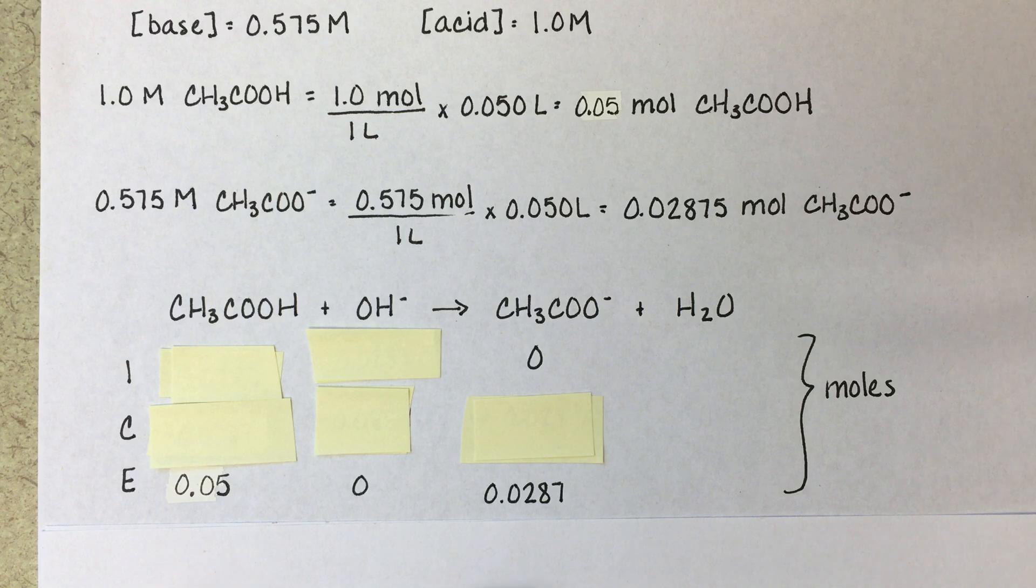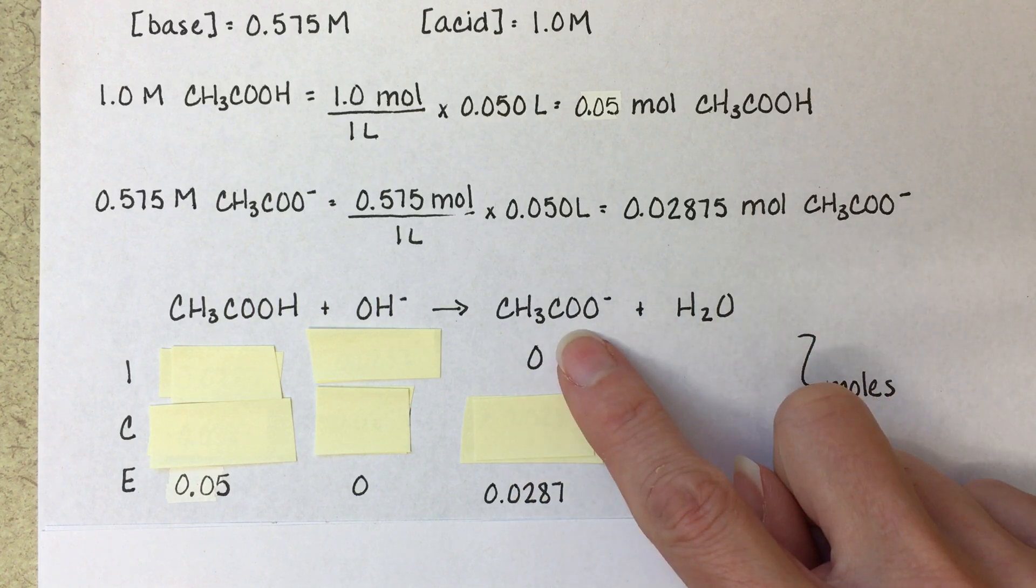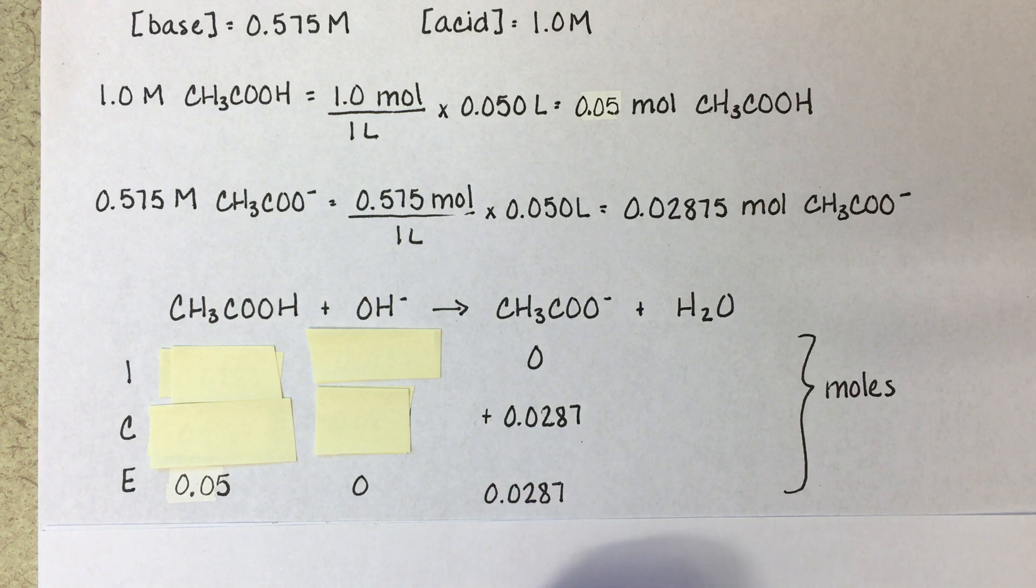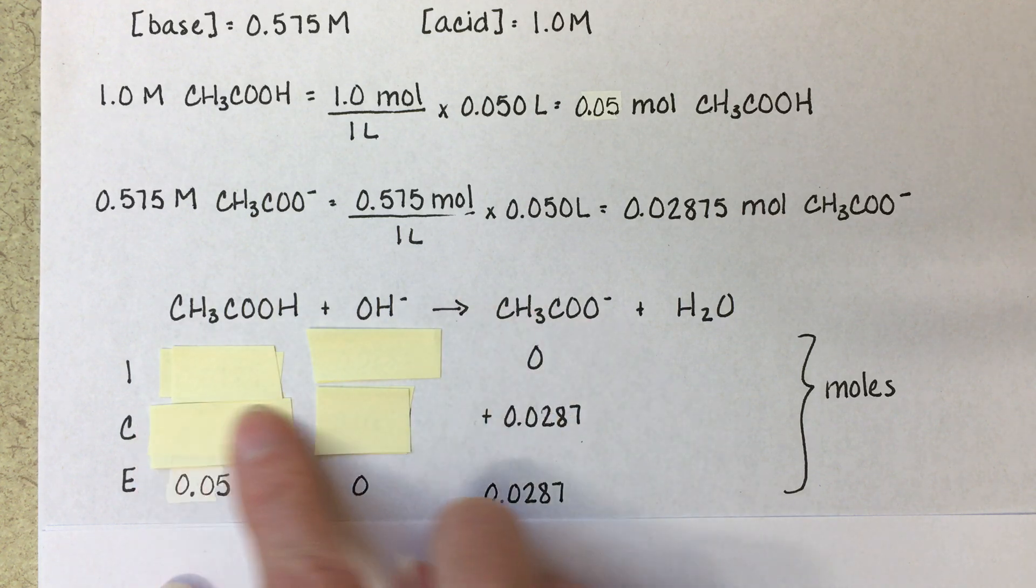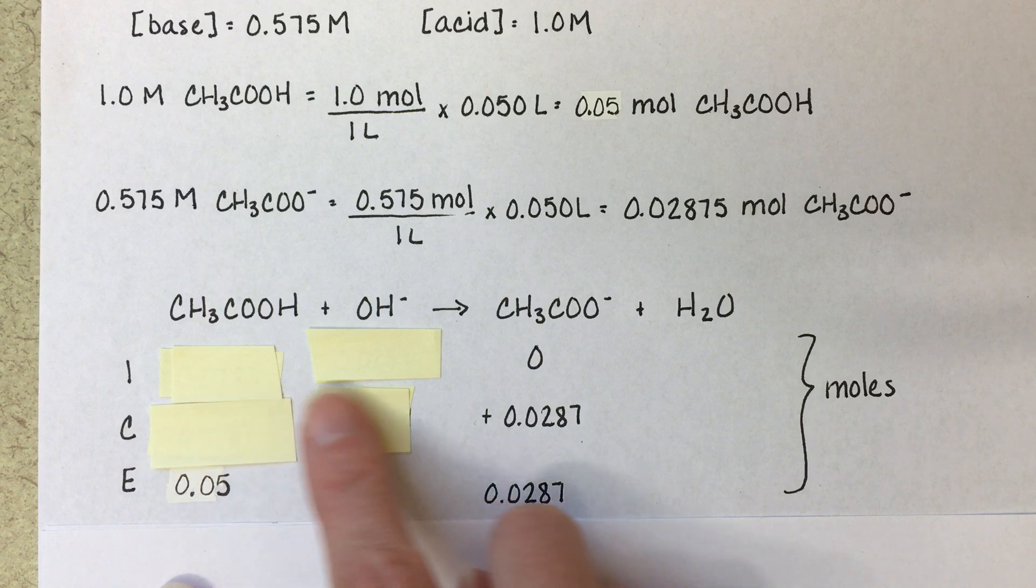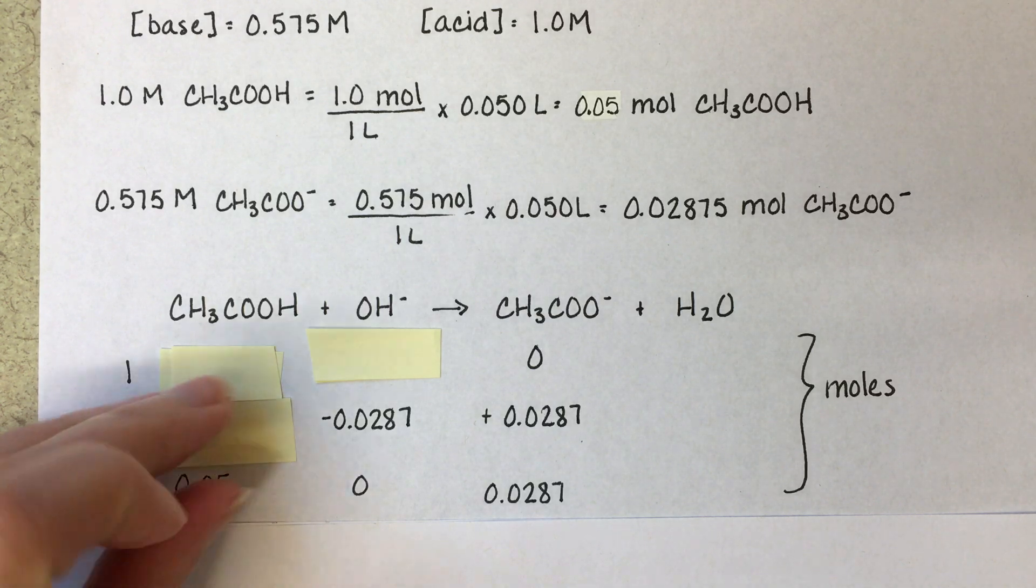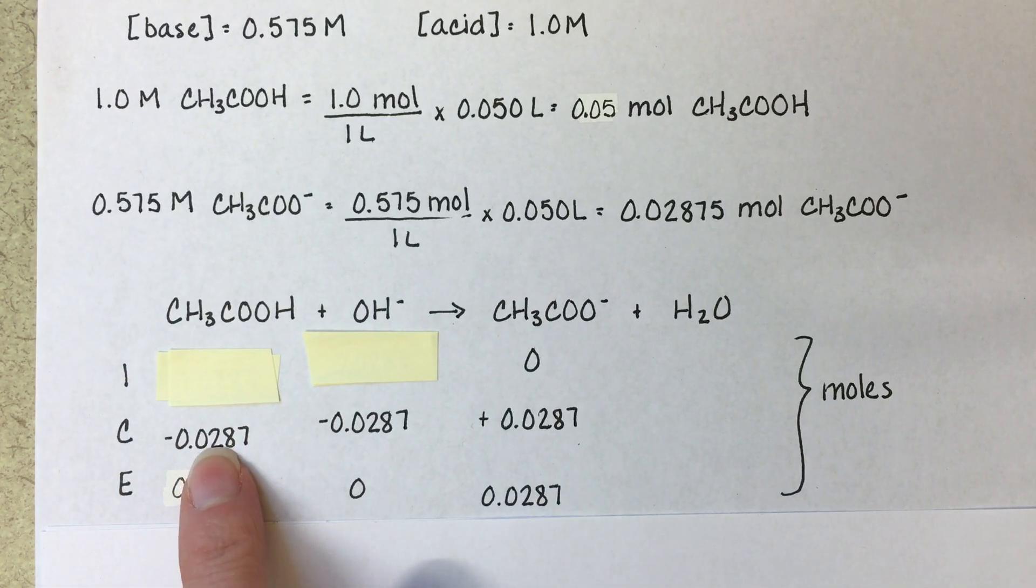Because of the stoichiometry of this equation, we know that this is minus x, minus x, plus x. So we can figure out the value of the change here because of this part. We know that 0 plus x needs to work out to be 0.0287. So we know that our x is plus 0.0287. And because of the stoichiometry, because this is 1 to 1 to 1, this number, the value of this number, has to be the same for all of these parts of the ice table. So we know that our change for acetic acid and hydroxide has to be minus 0.02875.